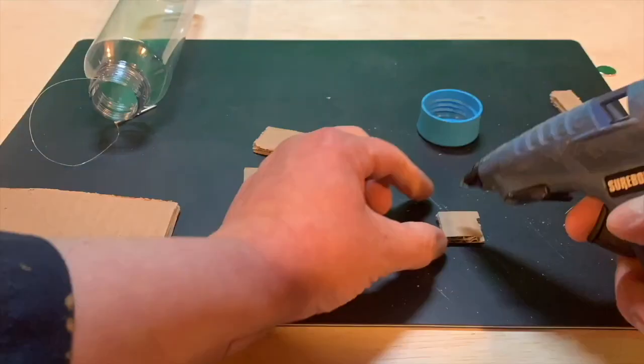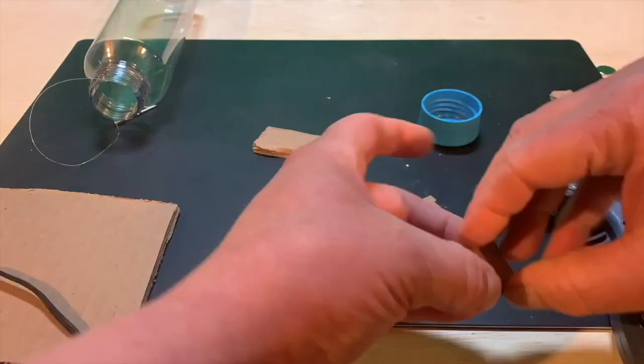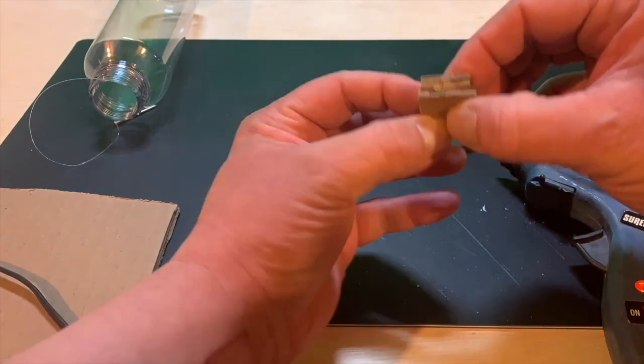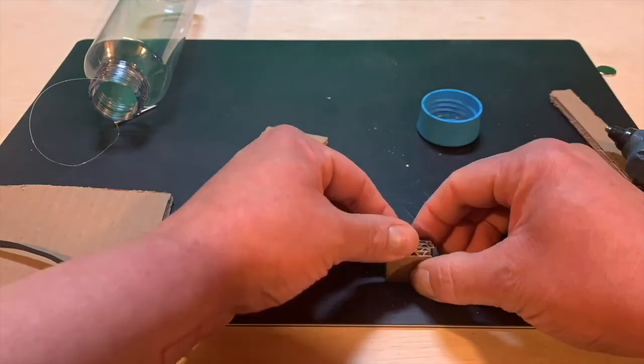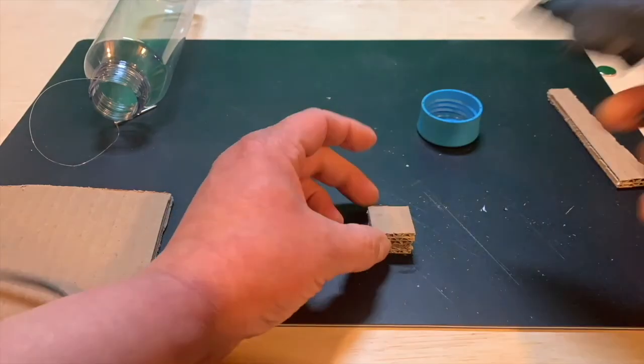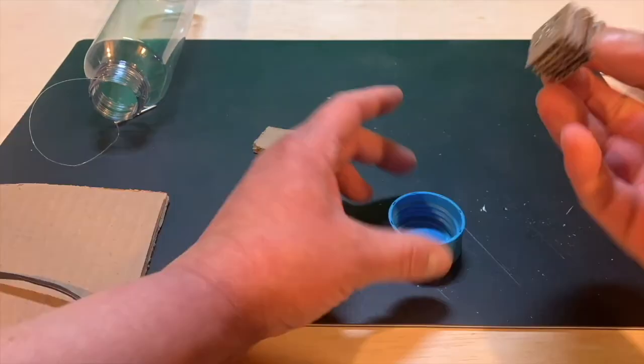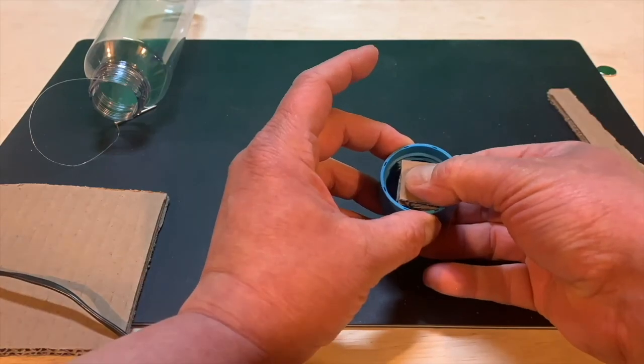You don't have to use cardboard here to put inside of the lid of the cap. You can use a piece of wood, foam, or some plastic. It's just that was the material I had on hand. And the reason why we do this is to bring the magnet closer to the bottle top.